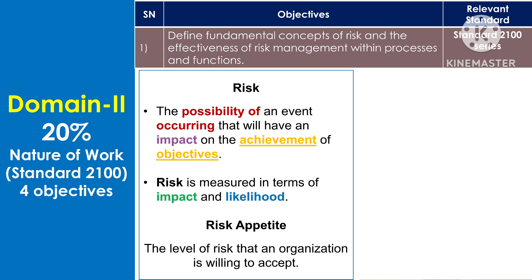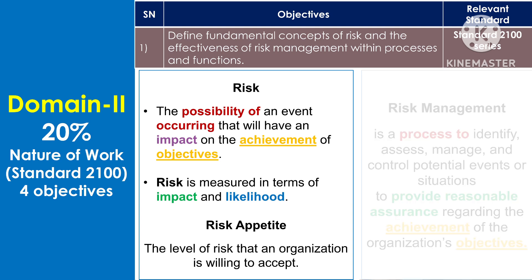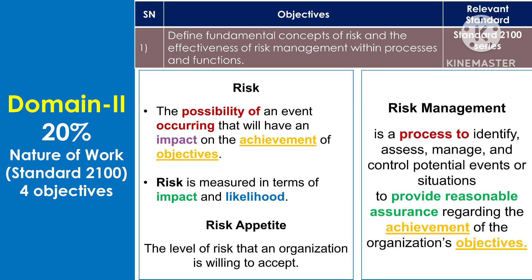Risk is the possibility of an event occurring that will have an impact on the achievement of objectives. Risk is measured in terms of impact and likelihood. Risk appetite is the level of risk that an organization is willing to accept. Risk management is a process to identify, assess, manage, and control potential events or situations to provide reasonable assurance regarding the achievement of the organization's objectives.